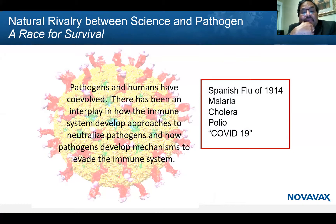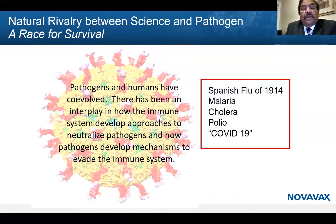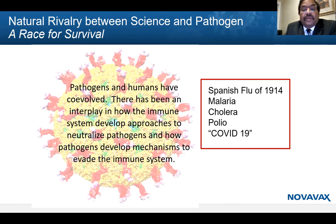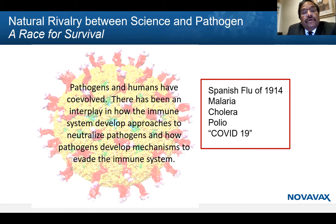We scientists try to make the vaccine to control the disease, and the pathogens try to infect us so that they can cause the pandemic. In cases such as the Spanish flu of 1918, malaria, cholera, polio, and more recently COVID-19, the pathogen won and caused the pandemic. Then as scientists, we came back and developed the vaccine or effective drug. It is very important to understand that there is always a race for survival by the pathogens, and there is an effort by scientists to control the disease.